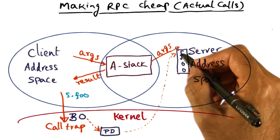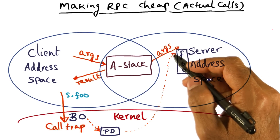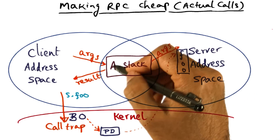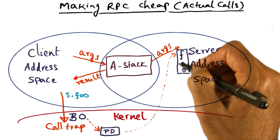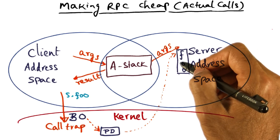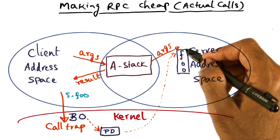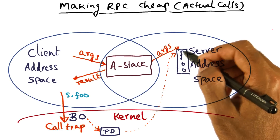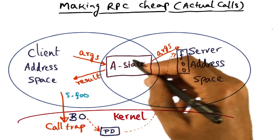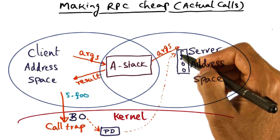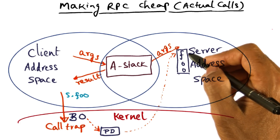The first thing that's going to happen in the server domain is our server stub is going to get into action and take the arguments that are sitting in the A stack and copy them into the stack that the server procedure is going to use. The kernel provides a special stack for that purpose — an E stack, an execution stack. The server stub is going to copy the A stack arguments into that E stack. And then at that point, procedure foo is ready to start executing.